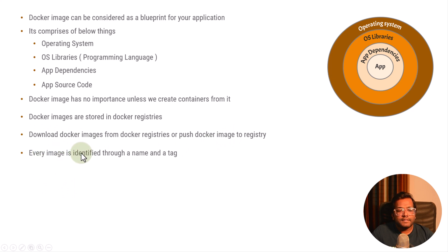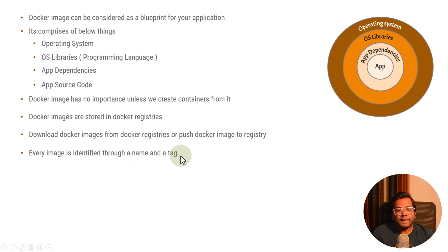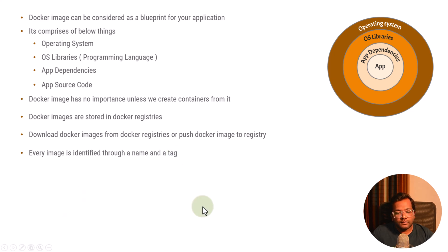Every image is identified through a name and a tag. Every image needs to be unique in the Docker ecosystem so that people can uniquely identify it. We have a naming convention: an image is identified using a name and a tag. Why a tag? Because let's say today you are developing an image and you published your application with three features, and later on you are adding new features to it. You will create a new tag for that particular image and host it on the Docker registry.